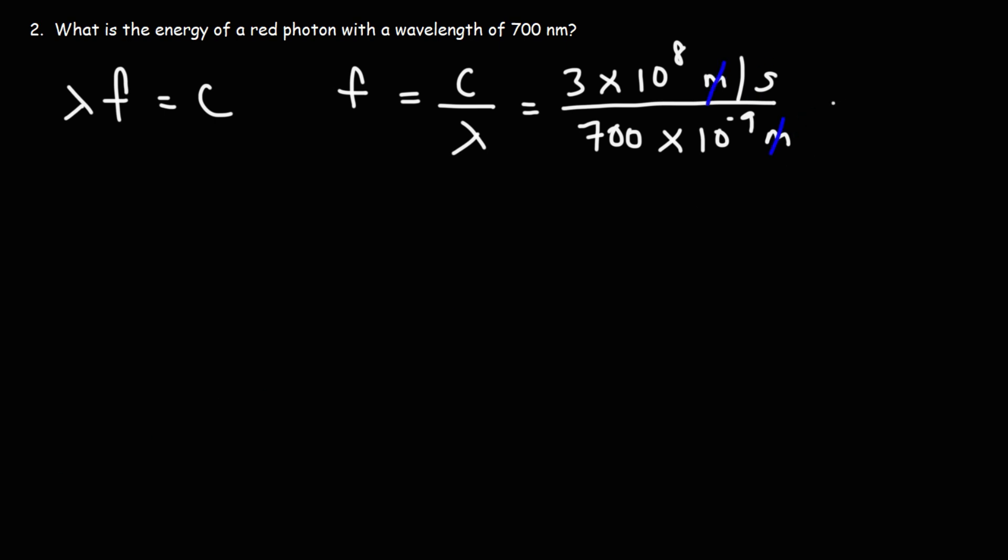Giving us the unit 1 over seconds, which is frequency in hertz. So 3 times 10 to the 8 divided by 700 times 10 to the negative 9. That's going to give us a frequency of 4.286 times 10 to the 14 hertz.